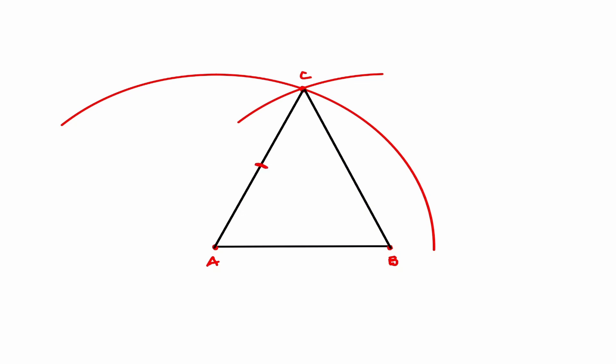AC is congruent to BC because AC uses the length of this arc, and BC uses the length of this arc. Those two arcs were made using the same length. Therefore, those two line segments AC is congruent to BC.